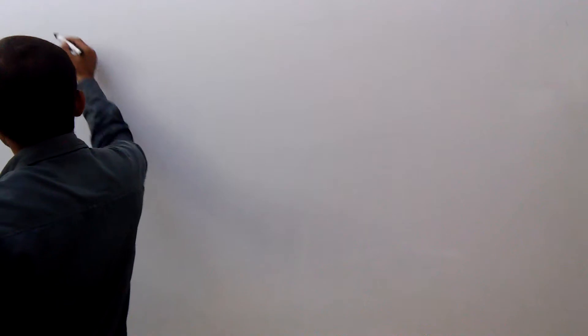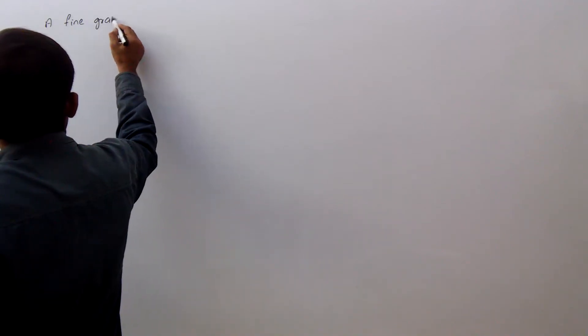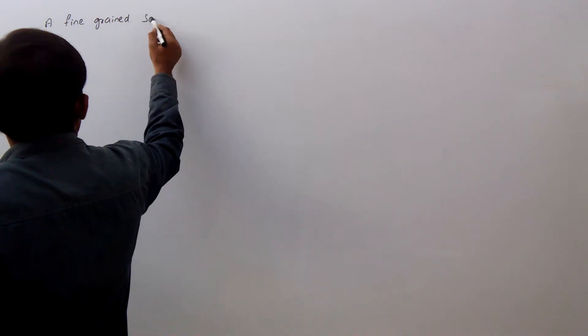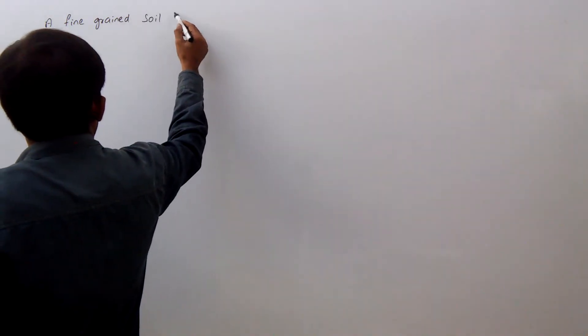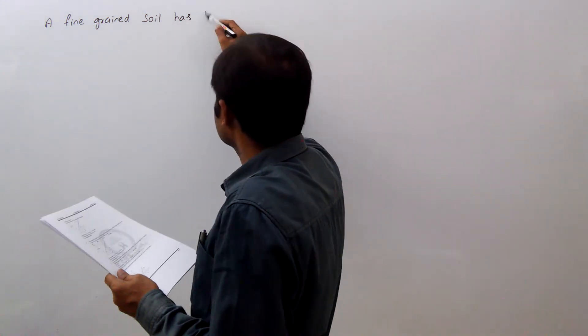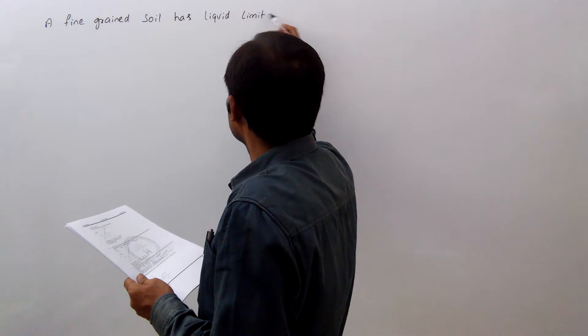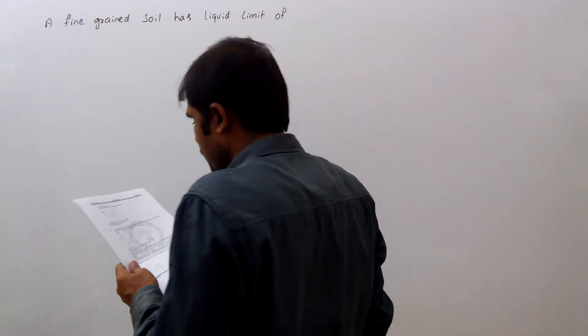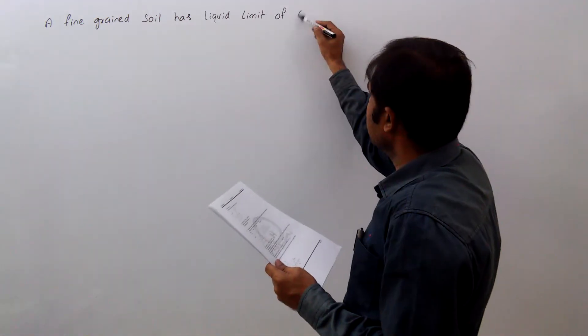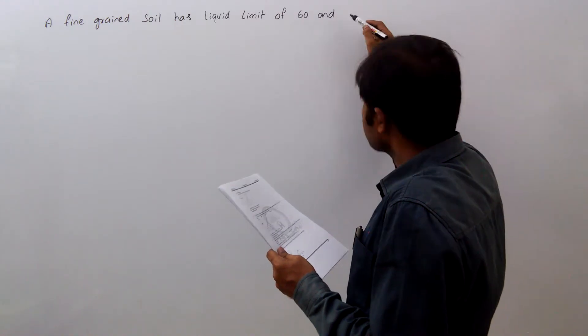A fine-grained soil has liquid limit of 60 and plastic limit of 20.